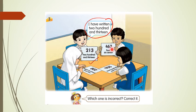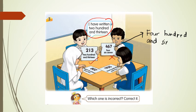Four hundred and sixty-seven — written as four, six, seven. Is it correct? No, there's no 'and.' The word 'and' is missing. I'll show you the correct answer. So this number should be: four hundred, and, sixty — with a hyphen — seven. You must put 'and' and you must put the hyphen. So the original answer was wrong.